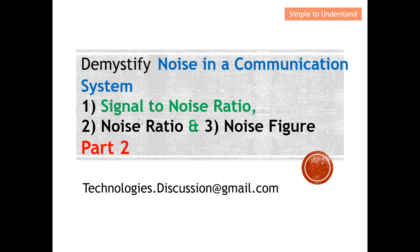Next, we study noise ratio. SNR only indicates signal strength versus noise, but it does not indicate how much noise is added by a circuit. Noise ratio is used to indicate how much additional noise a device or circuit introduces. That is the key difference between SNR and noise ratio.